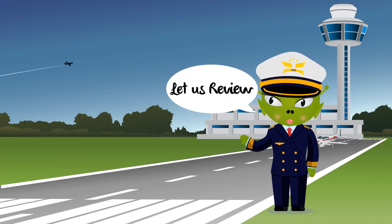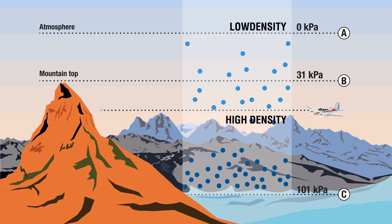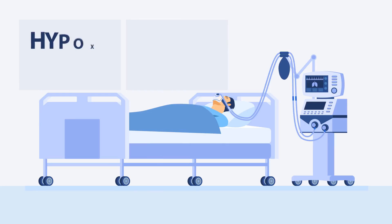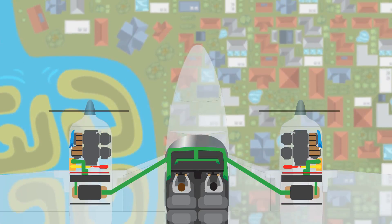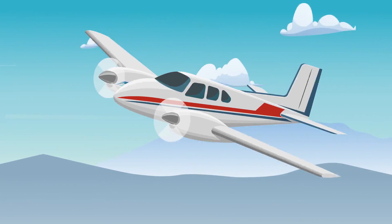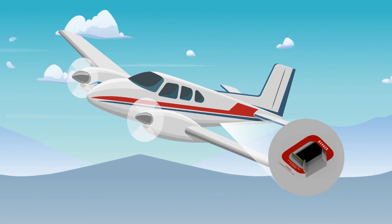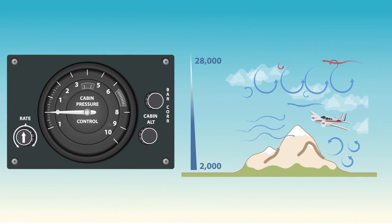Let us review. Atmospheric pressure decreases with higher altitude, which means less oxygen per breath of air. Hypoxia is the medical condition where there is a lack of oxygen in the body. Aircraft cabins are pressurised to enable comfortable breathing. Air is constantly supplied by the turbocharger in the engine to the cabin. The outflow valve regulates the cabin pressure and cycles the air for fresher air. The cabin pressure regulator controls the system, which is set by the pilot for a differential pressure.